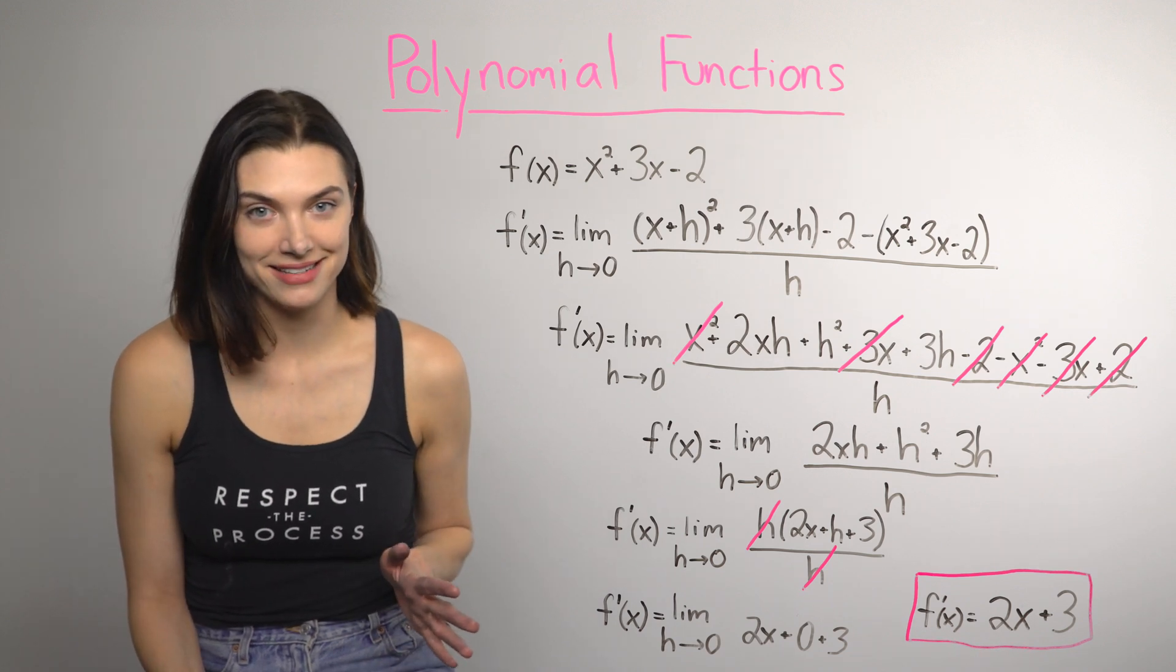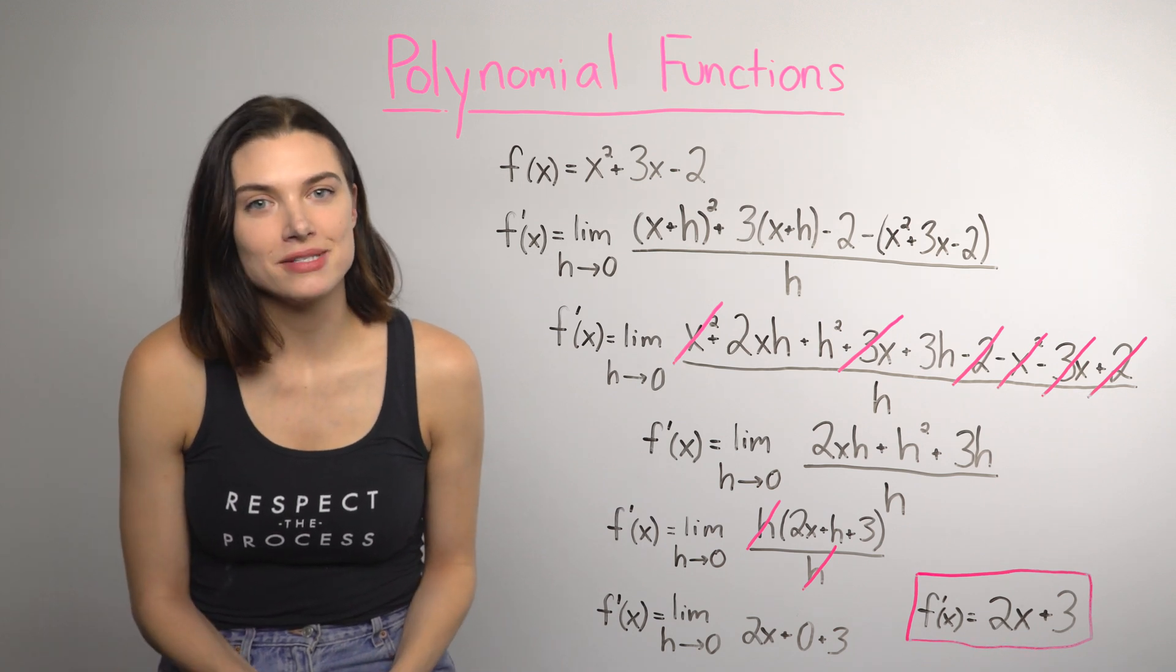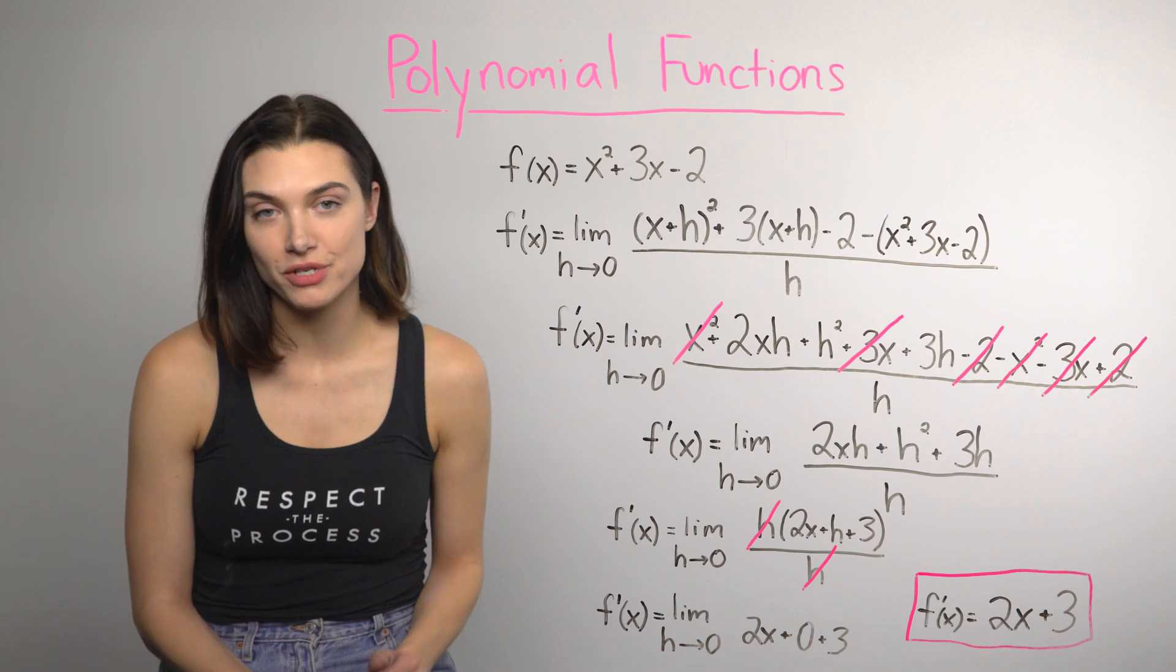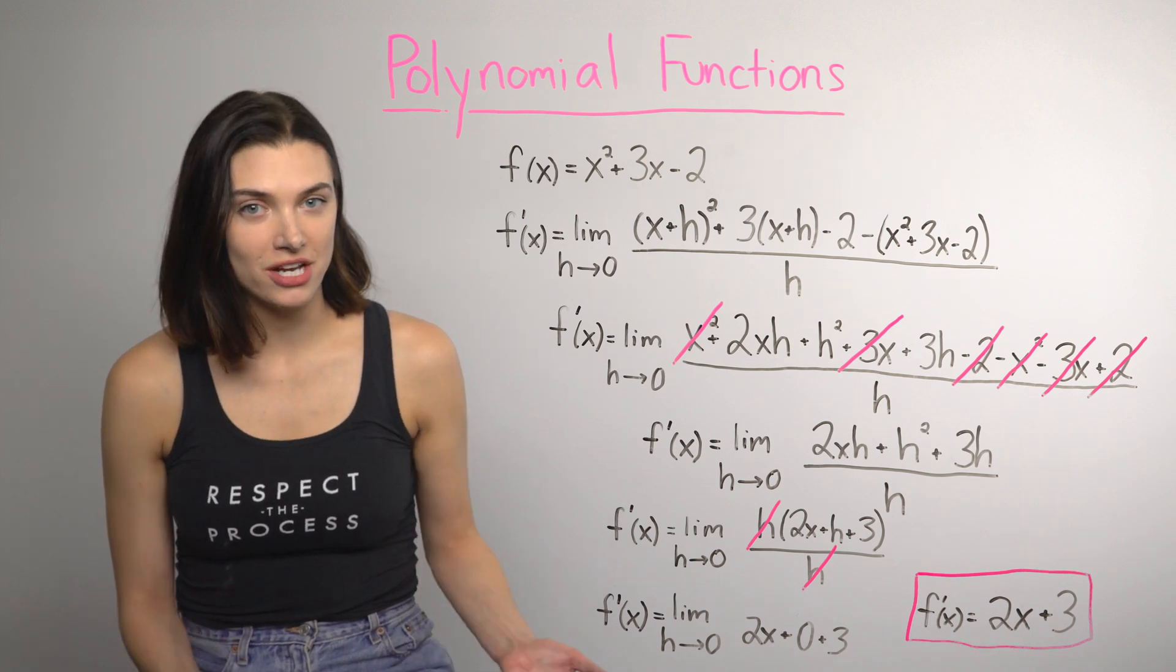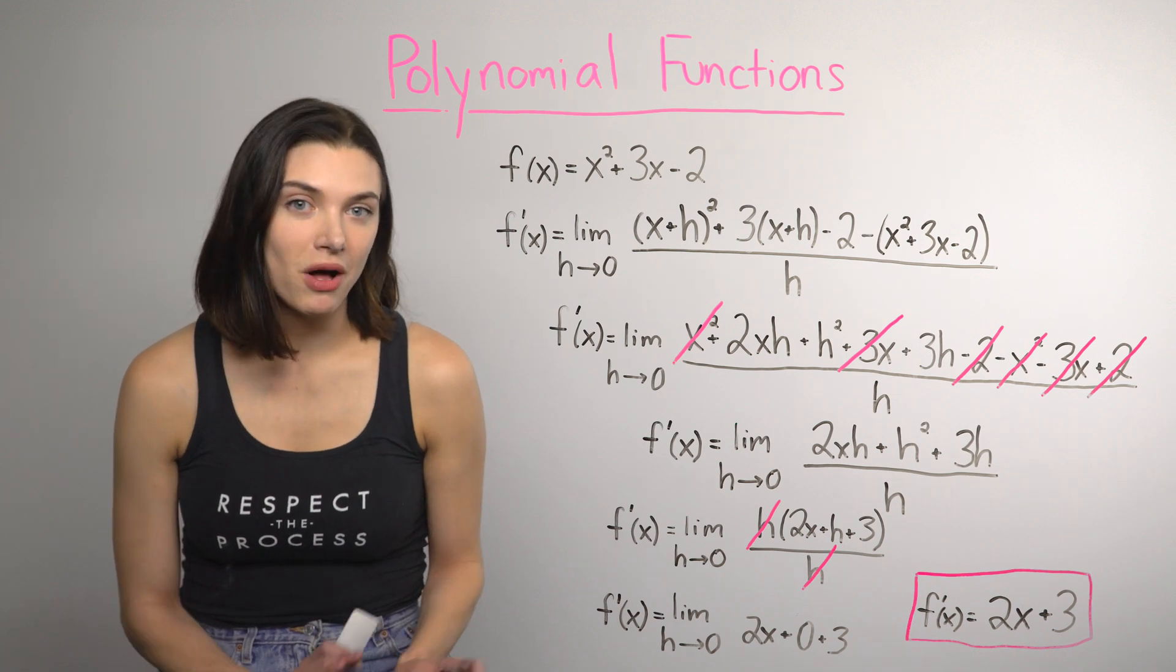Don't be scared that there's still an x in here. The result is a function. That's because the derivative represents the instantaneous rate of change for a point from the original function and how much it's changing can be different at every point. So, that's how this works for polynomials.